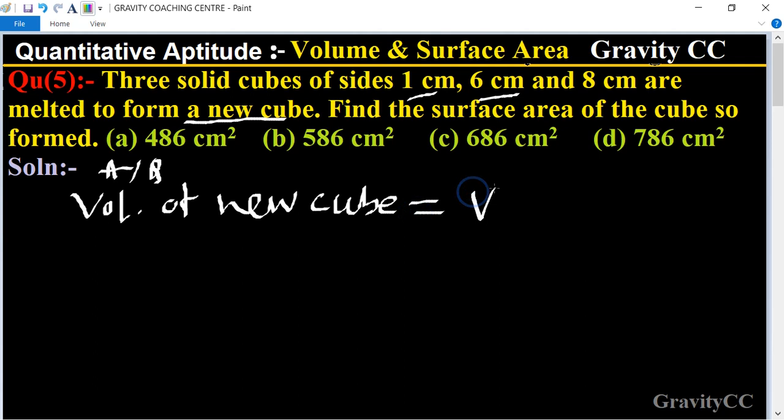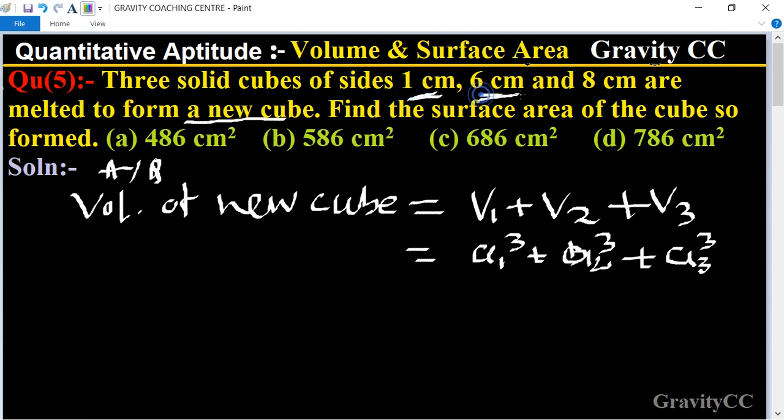volume of first cube plus second cube plus third cube, equal to a₁³ + a₂³ + a₃³. So here a₁ = 1, a₂ = 6, and a₃ = 8.